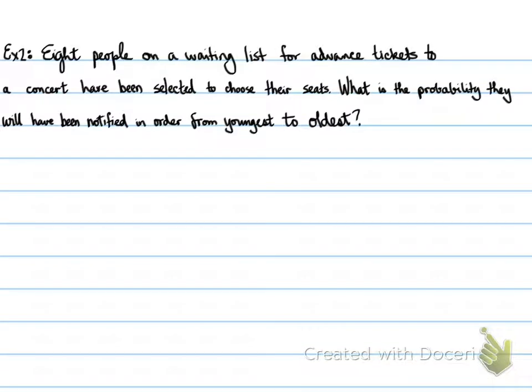Now, example number 2. 8 people on a waiting list for advance tickets to a concert have been selected to choose their seats. What is the probability that they will have been notified in order from youngest to oldest? So what's the probability of going from youngest to oldest? Well, that is, again, we have 8 places and in order for them to be from the youngest to the oldest, assuming there are no twins sharing the same birthday,